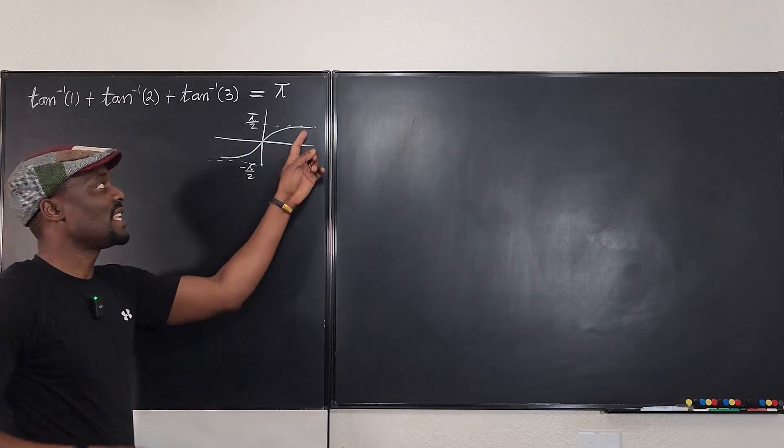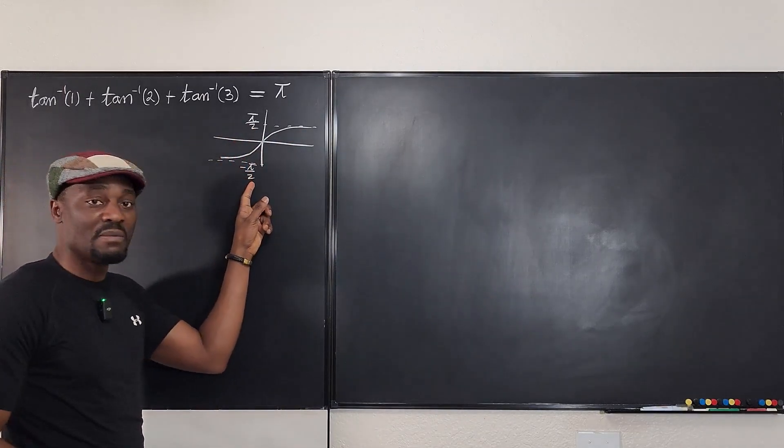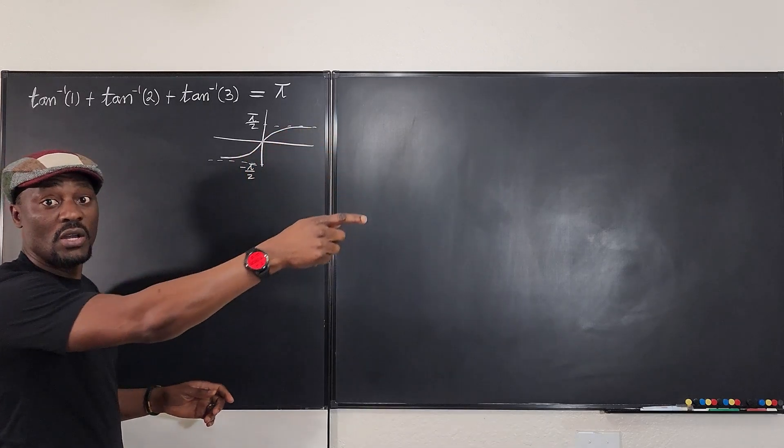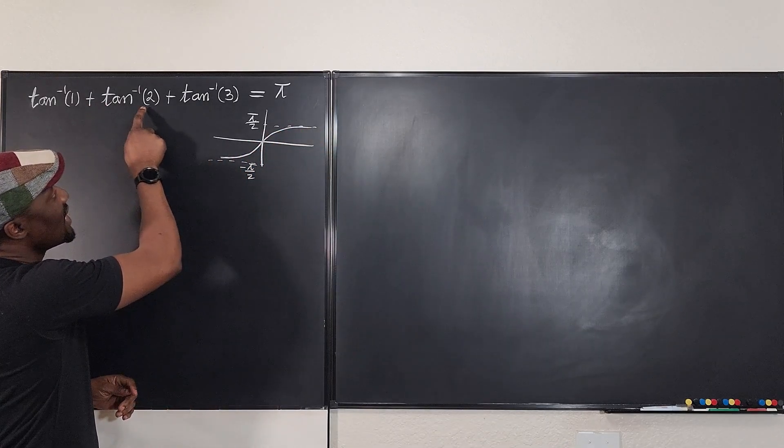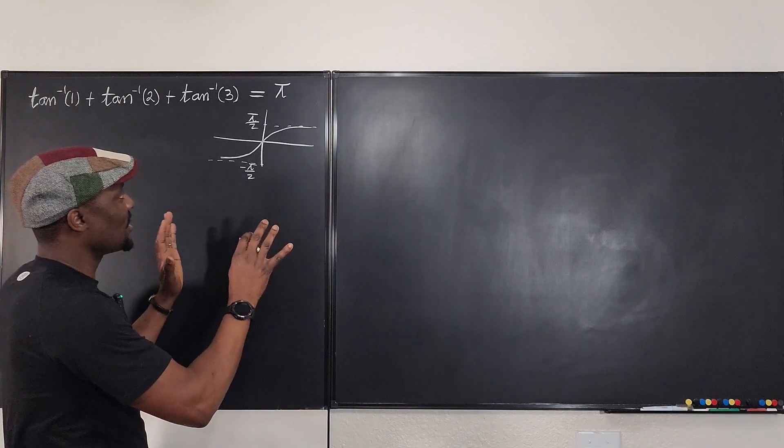So this part is negative π/2 and here is π/2. So the maximum any of these can be is π/2 and the minimum could be negative π/2. And because this is an odd function, I can see that this must be from some positive graphs, so I'm just going to stick to that.